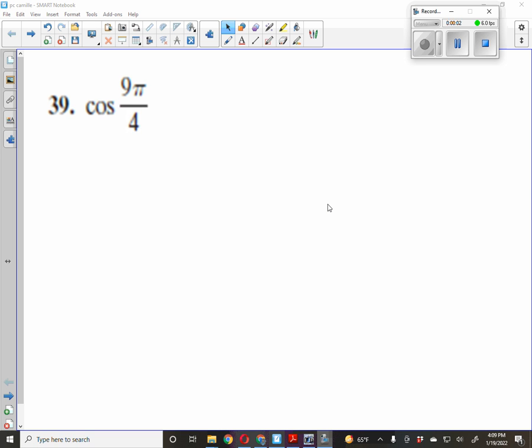All right, so this is a co-function identity problem where we know that this is bigger than 2π. So if I were to say cosine 9π over 4 minus 2π...